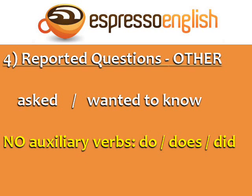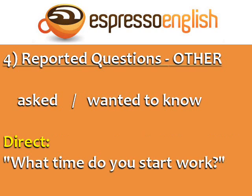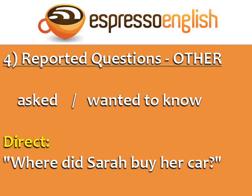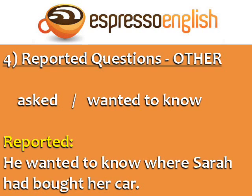To report other questions that are not yes or no questions, we use 'asked' and 'wanted to know' with no auxiliary verbs do, does, or did. For example — Direct: 'What time do you start work?' Reported: 'He asked what time I start work.' There is no auxiliary verb 'do' in the reported question. Direct: 'Where did Sarah buy her car?' Reported: 'He wanted to know where Sarah had bought her car.' Again, there is no auxiliary verb 'did' in the reported question.